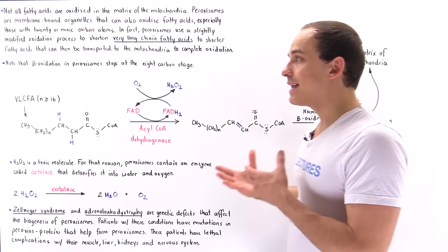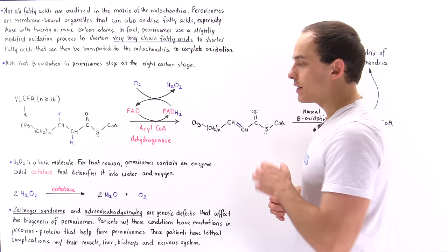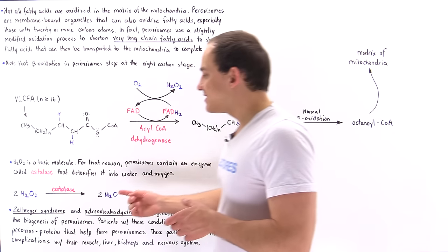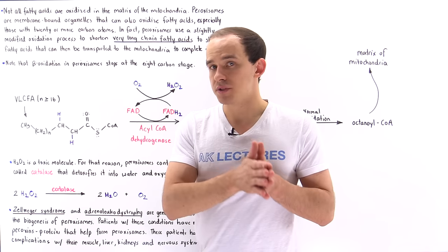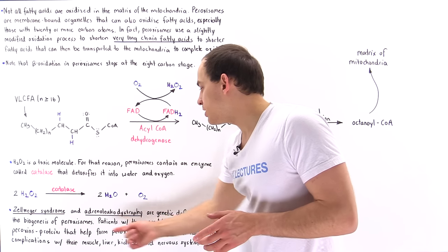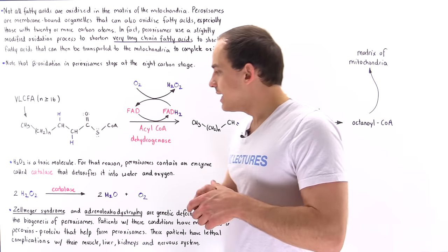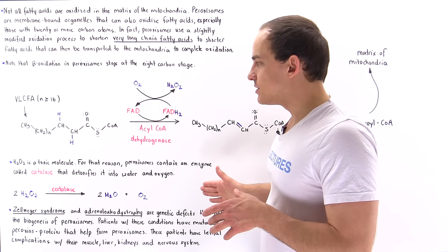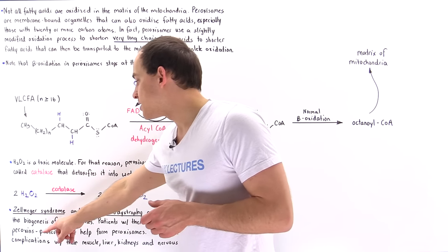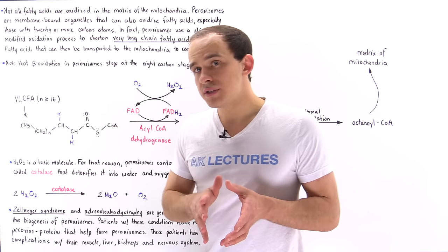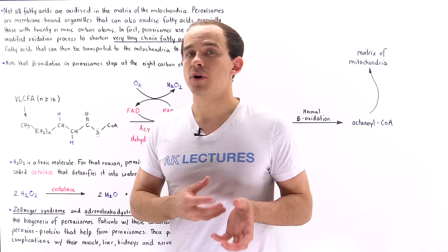To answer that question, we can study a set of genetic disorders that are known as the Zellweger Spectrum Syndromes. The Zellweger Syndrome is the very severe form of the Zellweger Spectrum Syndrome, while the adrenal leukodystrophy is a slightly less severe form. In both of these cases, there is some type of genetic mutation in proteins known as peroxins. And these proteins called peroxins are basically responsible for actually forming the peroxisomes.